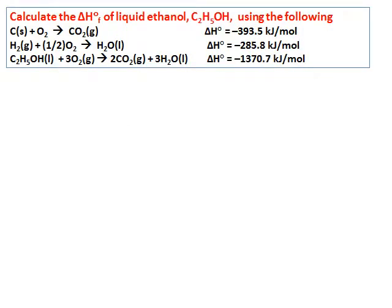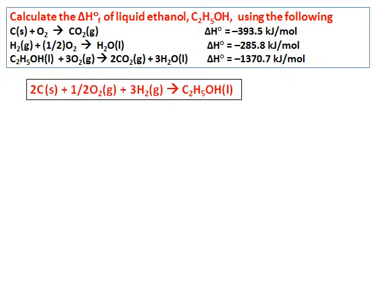Calculate the heat of formation of liquid ethanol using three given equations: carbon plus oxygen giving CO₂; hydrogen plus half oxygen giving water; and ethanol plus oxygen giving CO₂ and water — with delta H° given for each. First, write the formation equation for ethanol, C₂H₅OH, formed from its elements: two carbons, three hydrogens, and half oxygen. This is the target equation we need.